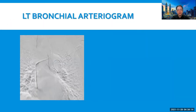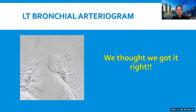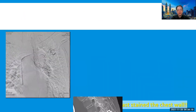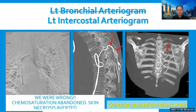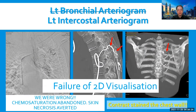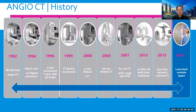On the left side, we thought it was a left bronchial arteriogram. However, on the CT scan, it shows opacification of the paraspinal muscles, and hence it was a left intercostal arteriogram. Embolization is aborted. This is also a failure of 2D visualization.